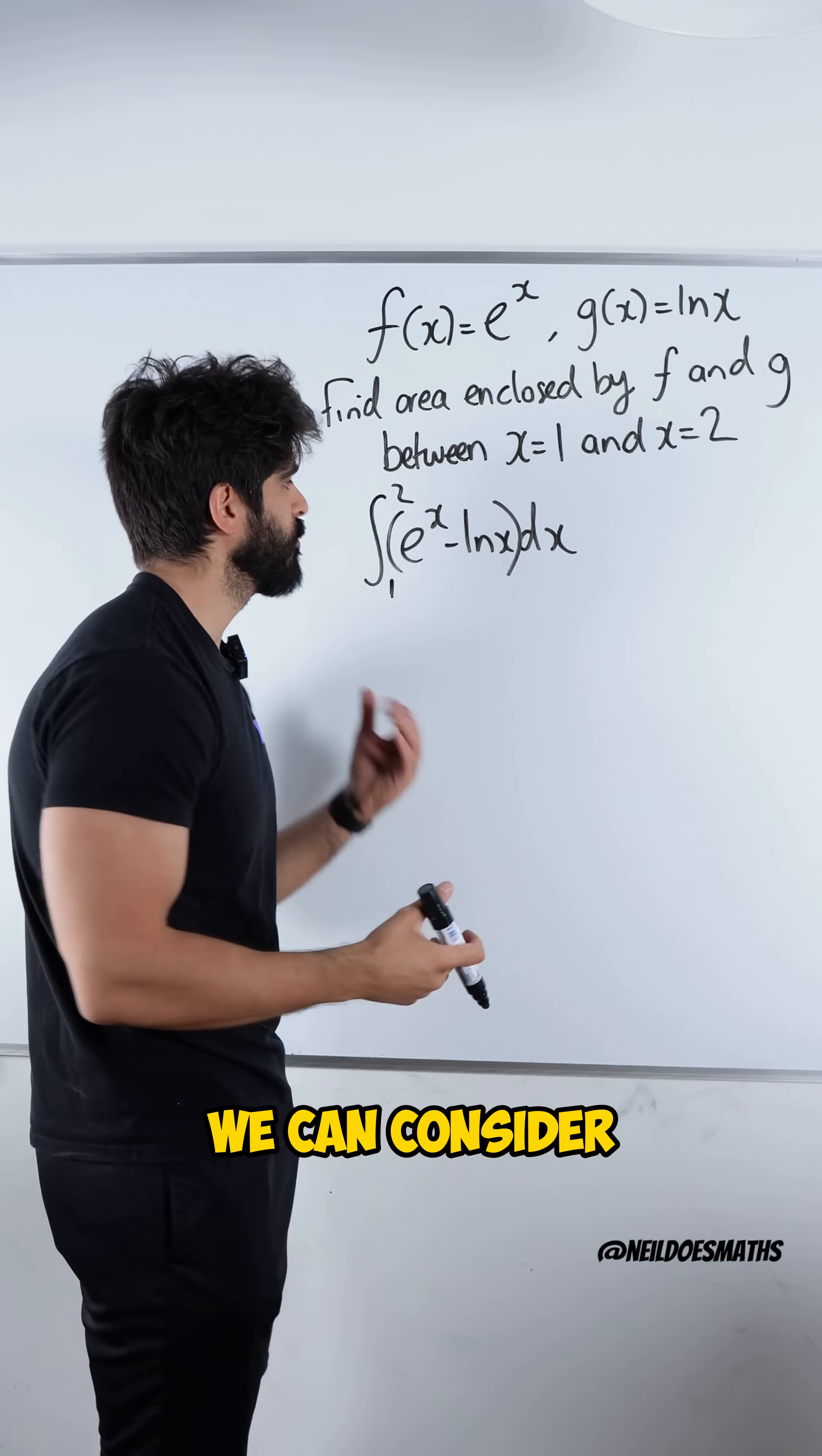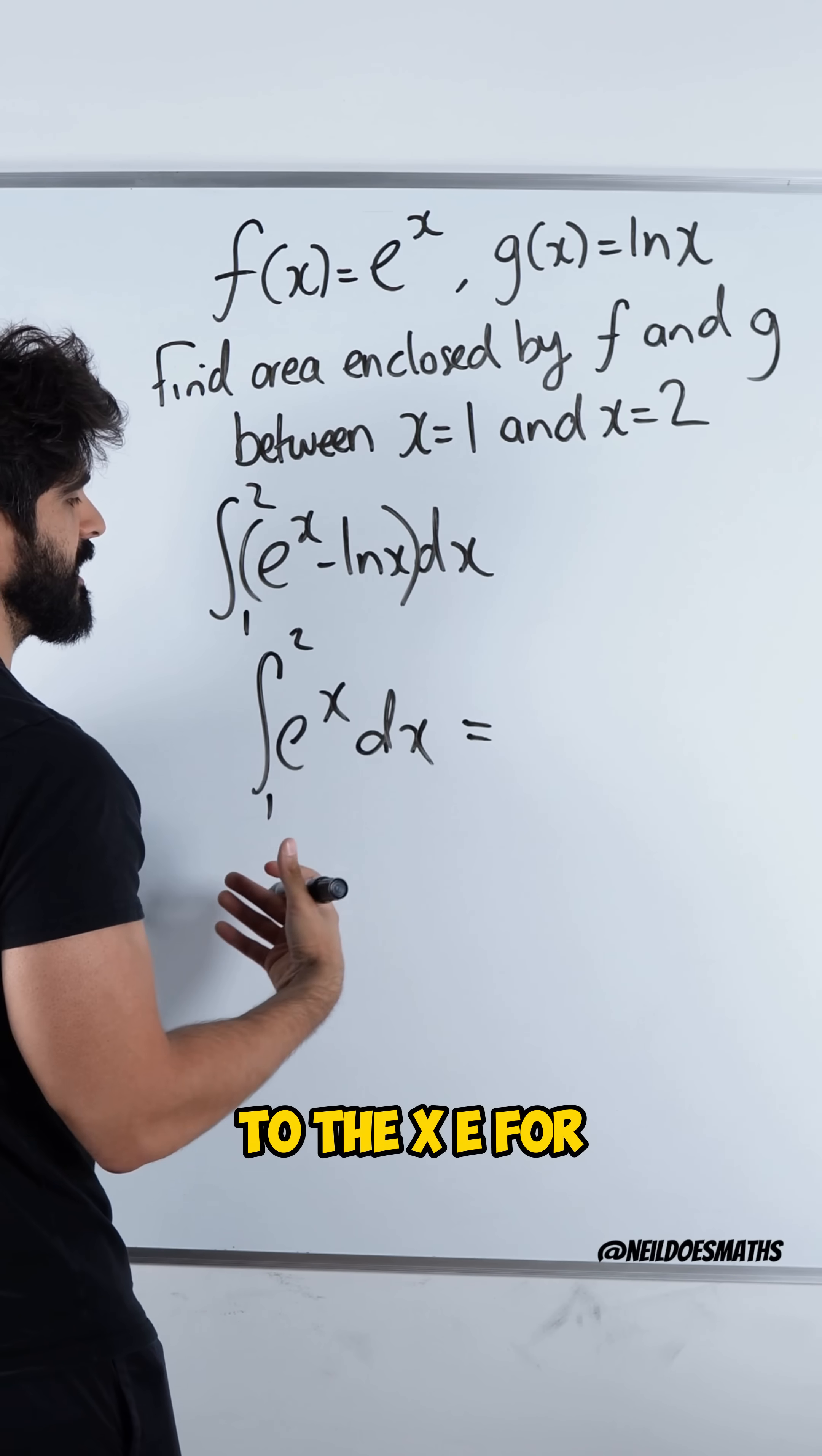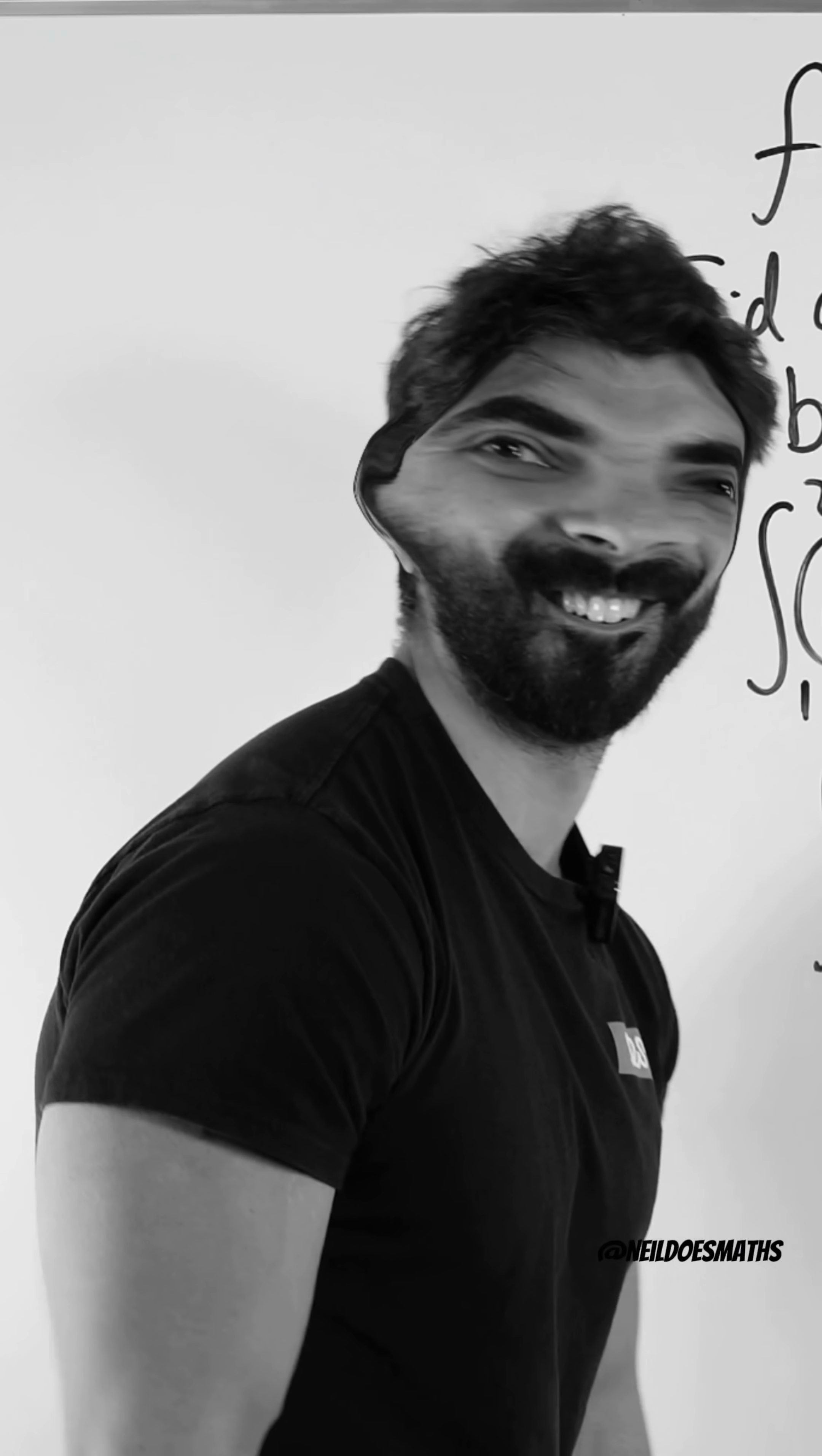To compute this integral, we can consider the integral of e to the x between 1 and 2 separately from ln x. Now the integral of e to the x between 1 and 2 is super easy. The integral of e to the x, e for easy, it just integrates to itself between 1 and 2. Then we substitute in... Wait, what?